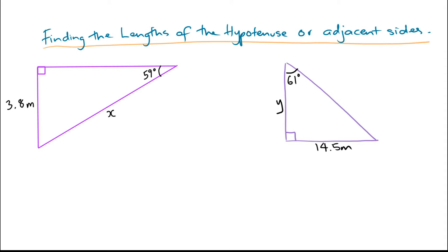Remember the first thing to do is to label the sides of your triangle. So if we're looking at this example over here, x is opposite the right angle, so that's going to be the hypotenuse side. Our angle of interest is 59 degrees — that's the angle that we've been given. So the side which is opposite that angle will be the opposite side, and the third side is the adjacent side. So label your triangle first.